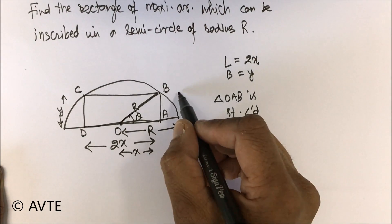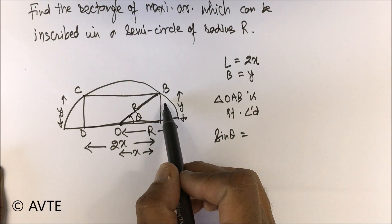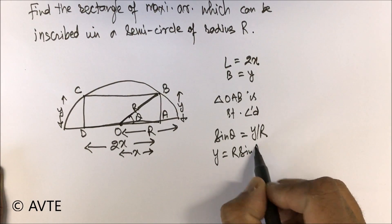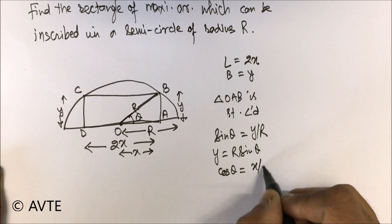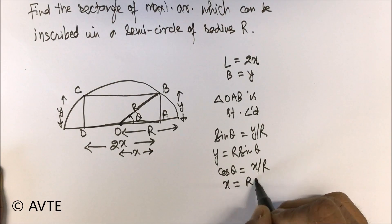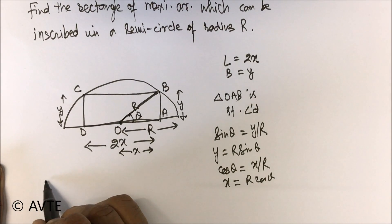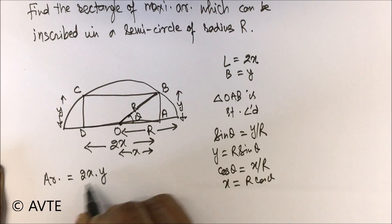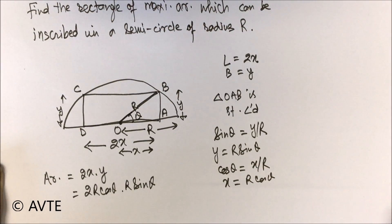Using the smaller triangle, half the length is x. We can fetch x and y using trig. Sine theta is perpendicular over hypotenuse, so y upon R — therefore y equals R sine theta. Similarly, cos theta equals x upon R, so x equals R cos theta. The length is 2x. The area function is 2x times y, which is 2R cos theta times R sine theta.